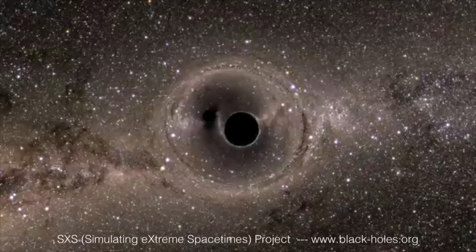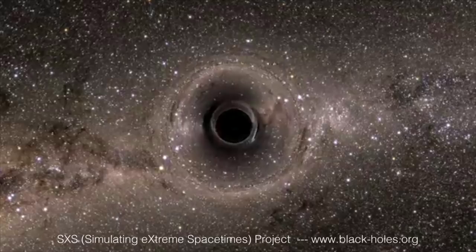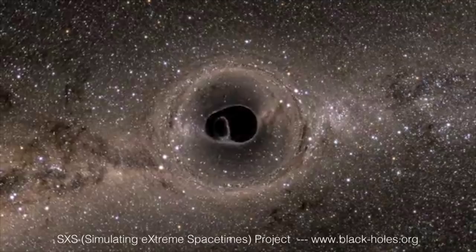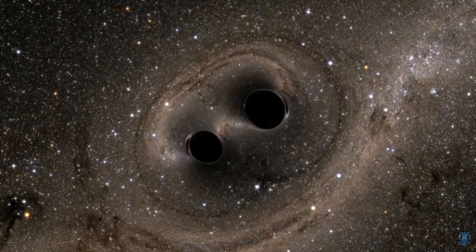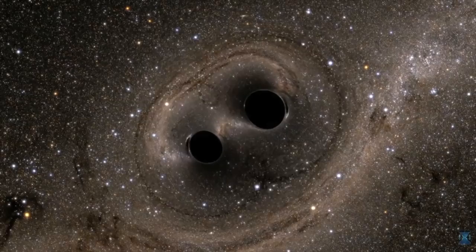When two black holes merge, they form a bigger black hole. One was 29 solar masses, the other 36 — you'd expect 65 solar masses total. But the result was about 62 solar masses. Three solar masses have disappeared, and via Einstein's famous formula E=mc², those three solar masses were turned into the energy of the gravitational waves. In that fraction of a second, the event was liberating more power than all the stars in the entire observable universe combined — all in gravitational waves.